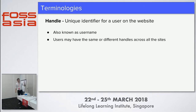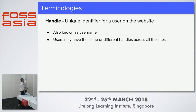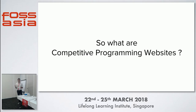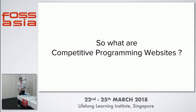And this is a generic one - a handle is basically on a particular website your username or handle, which is the unique identifier of the user on that website. Any questions so far with the terminologies? So what are the competitive programming websites? These websites have a bunch of problems which you can submit code to, and they'll give you various statuses. That is basically how you learn algorithmic programming and logical thinking.